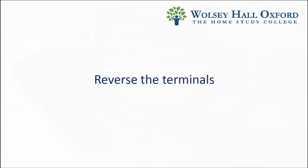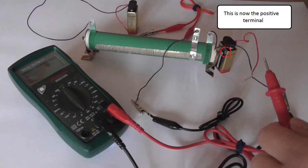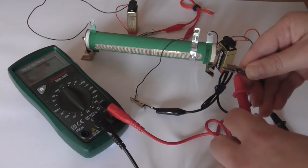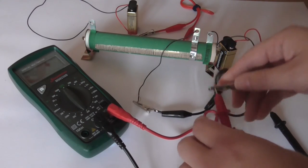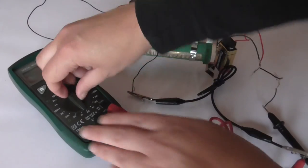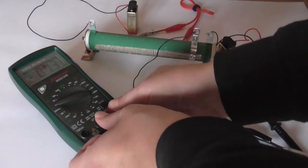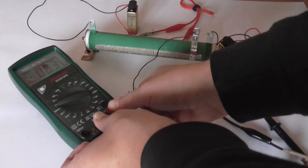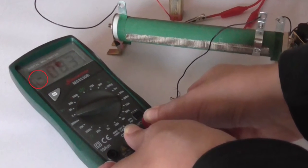To do the second part of the experiment, we reverse the terminals. Now the current has a negative value.